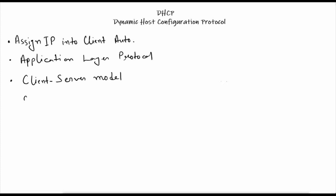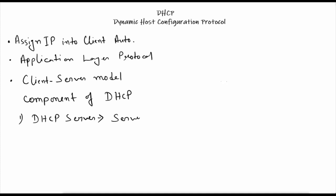Let's see some of the components of DHCP. The first component is the DHCP server. A DHCP server is a server responsible for providing and managing IP address assignments. For example, a Windows server can work as a DHCP server, or a router or a firewall can also work as a DHCP server.